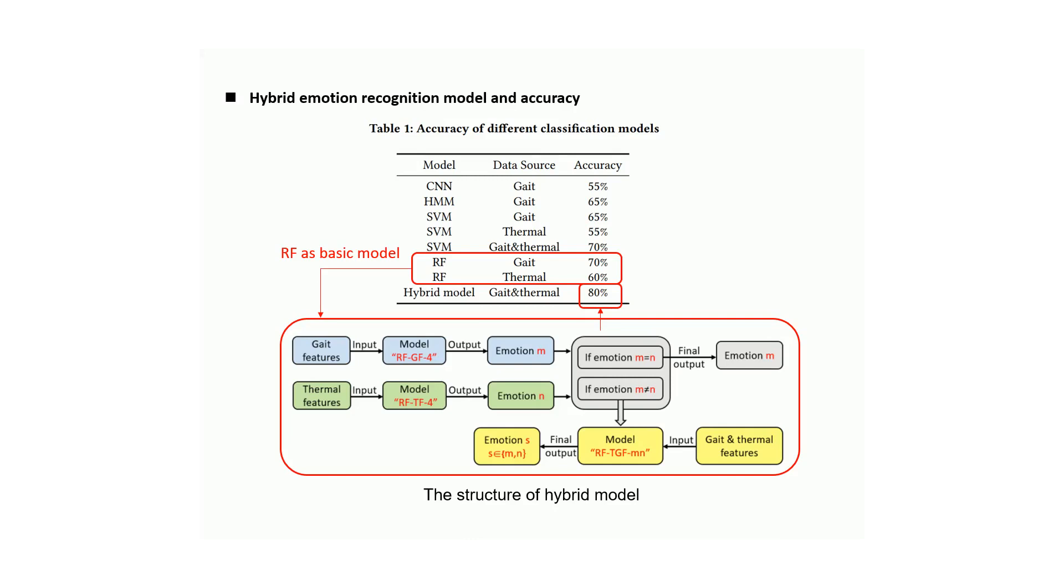If not, we input both thermal and gait features to model RF-GFM, which is trained with both features with label emotion M and emotion N in the database. The output is the final prediction.